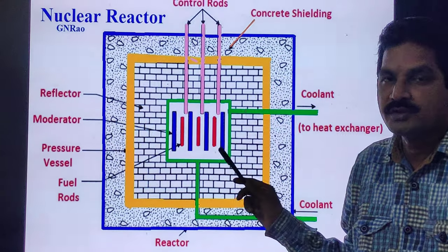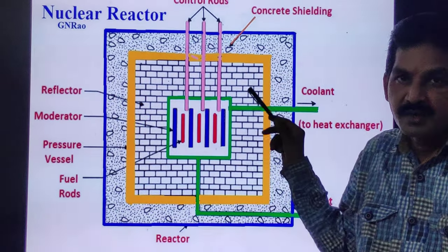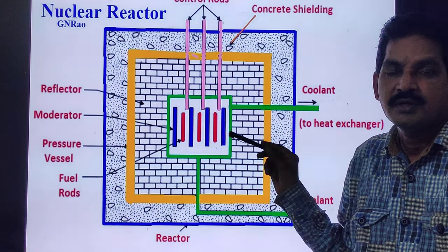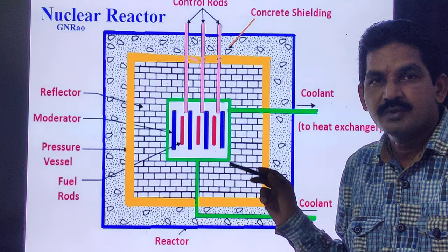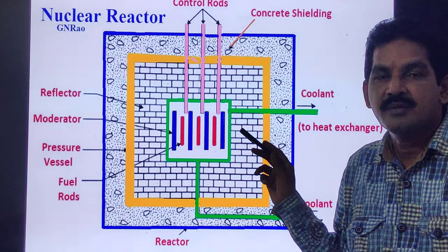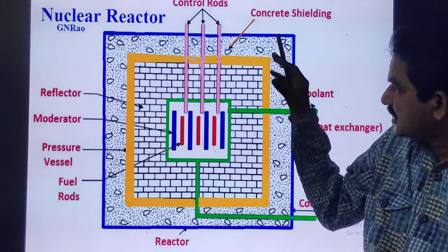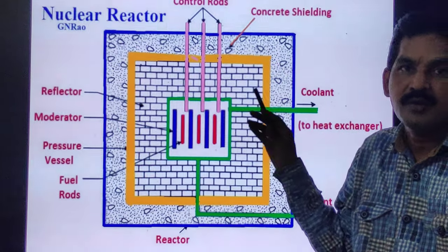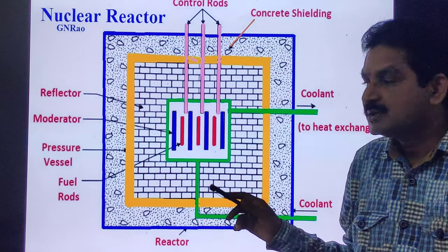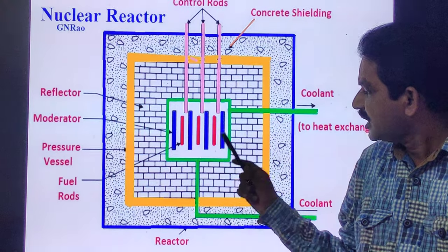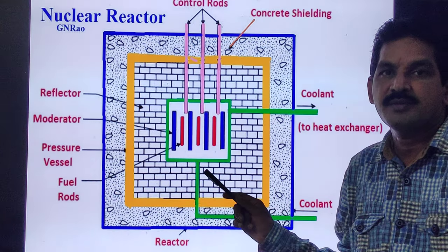The top of the nuclear core is defined by an upper guide structure assembly. This assembly is made of stainless steel and has many purposes. The upper guide structure assembly exerts an axial force on fuel assemblies, thus defining the exact position of the fuel assembly in the core.